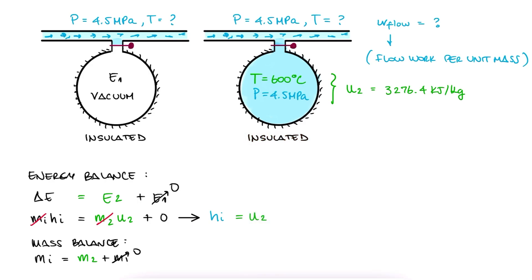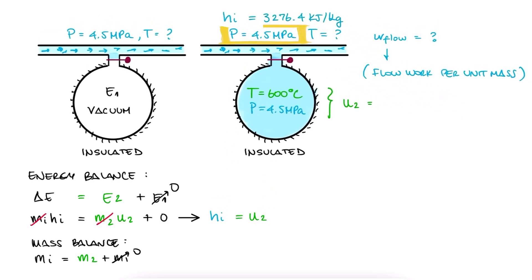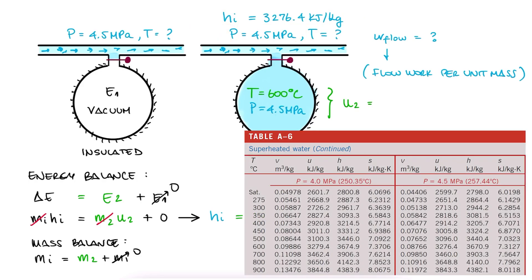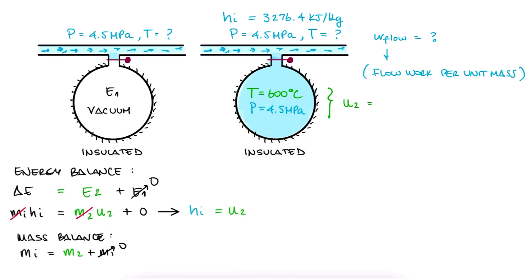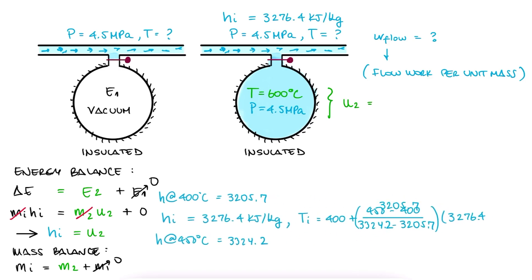Since this is equal to the specific enthalpy of the steam coming in, which is the steam in the supply line, we can find the temperature of the line with its pressure and specific enthalpy. We go to the same table for 4.5 megapascals, and since our value for the specific enthalpy is between 3205 and 3324, we interpolate between 400 and 450 degrees Celsius to find that the temperature of the line is 429.8 degrees Celsius.